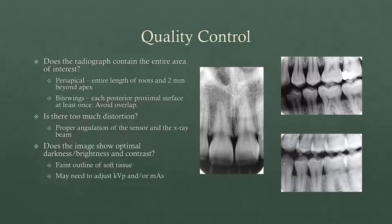For quality control, you want to make sure that the radiograph contains the entire area of interest. For periapicals, that means containing both the entire crown and the entire root, but also because you want to evaluate the bone around those roots, you need to see at least two millimeters beyond the apex. For bitewings, it's important to open up the contacts between two different teeth, so you have to get the angulation correct to where the teeth come to a point or there's a little dark line in between them — that way you can really see caries.